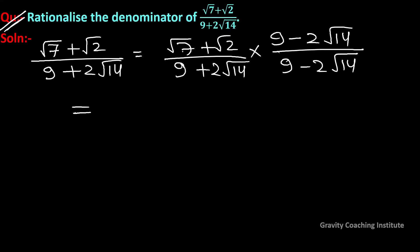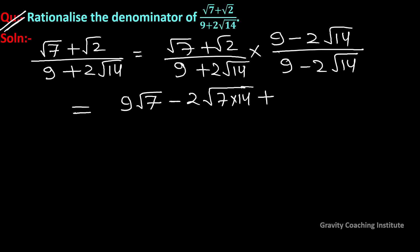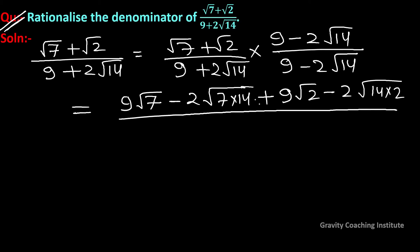Now we expand the numerator: √7 multiplied by 9 gives 9√7. √7 multiplied by 2√14 gives 2√(7×14). Plus √2 multiplied gives 9√2, minus 2√14 × 2. And in the denominator we will use the algebraic identity.